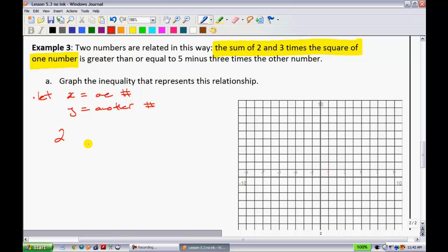Two numbers are related in this way. The sum of 2 and 3 times the square of one number. So let's talk about that right there. The sum of 2 and 3 times the square of one number. So we have 2. Sum is telling me that we're adding. So we have 2 plus 3 times the square of some number. So that's the square of some number times 3. So that's that side of the equation. Now the next part right here is they tell you that it is greater than or equal to. So greater than or equal to. I'm going to use the greater than or equal to sign. The next thing that we have is we'll deal with the other side of the equation. It says 5 minus 3 times the other number. So 5 minus 3 times the other number. Well, I have 5 minus 3 times the other number. So since I used x, this time I will use y.